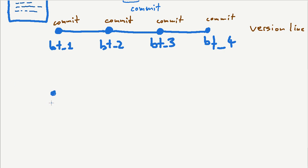Let's say this is the initial version — version number 1. You create version number 2, and you hand version 2 to your professor. Your professor makes some changes and creates version number 3. But at the same time, while your professor is working on this, you can't just wait — maybe they need three weeks to do the correction. During that time, you're also going to make a new version. Let's call it 3b.